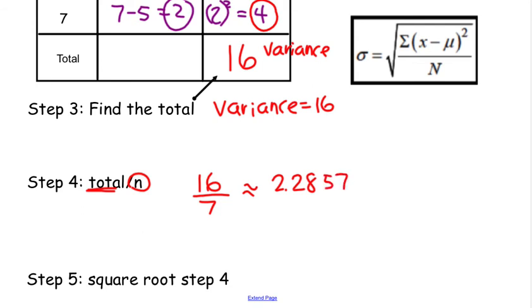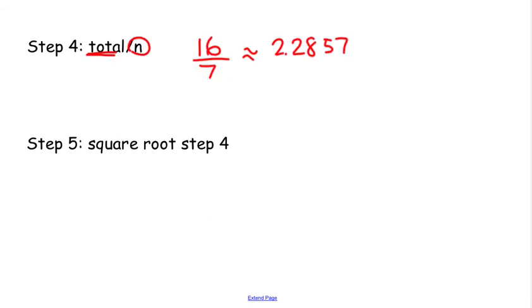And now you're going to square root that number. So we're going to take the square root of 2.2857. And we get approximately 1.511.